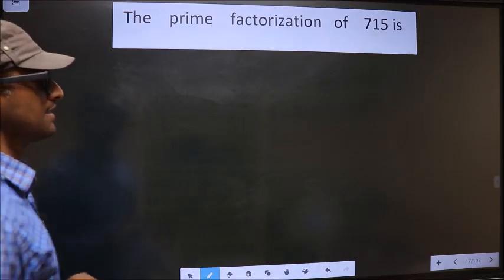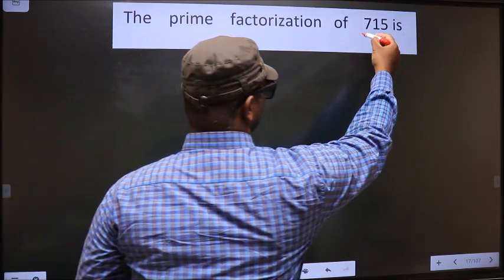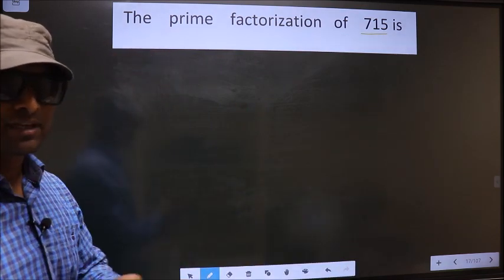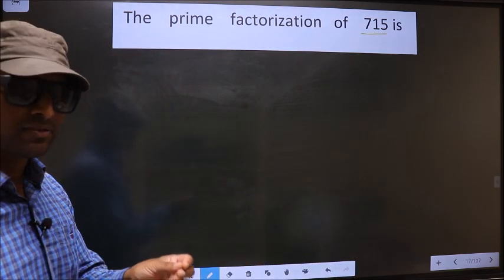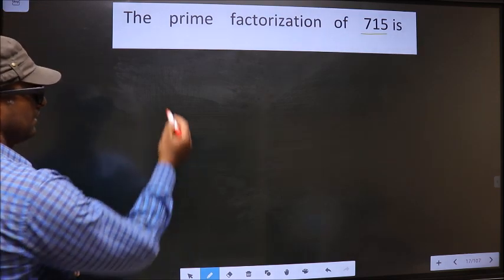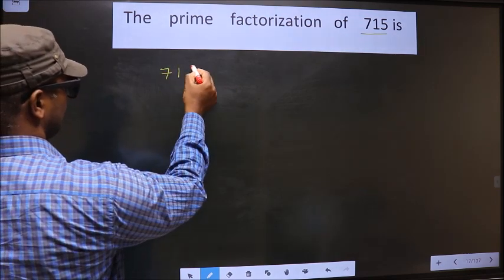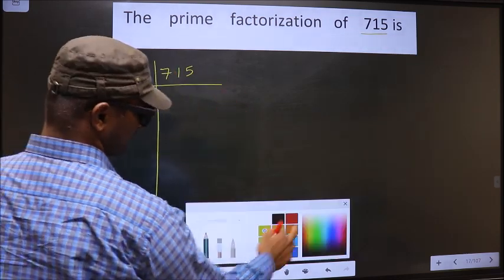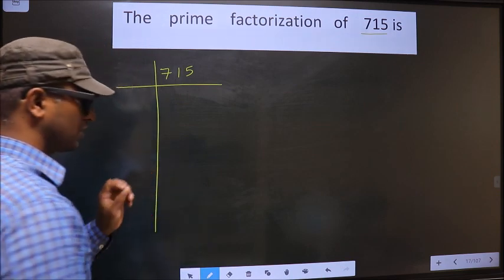The prime factorization of 715. To do the prime factorization, first we should frame it in this way. That is 715.